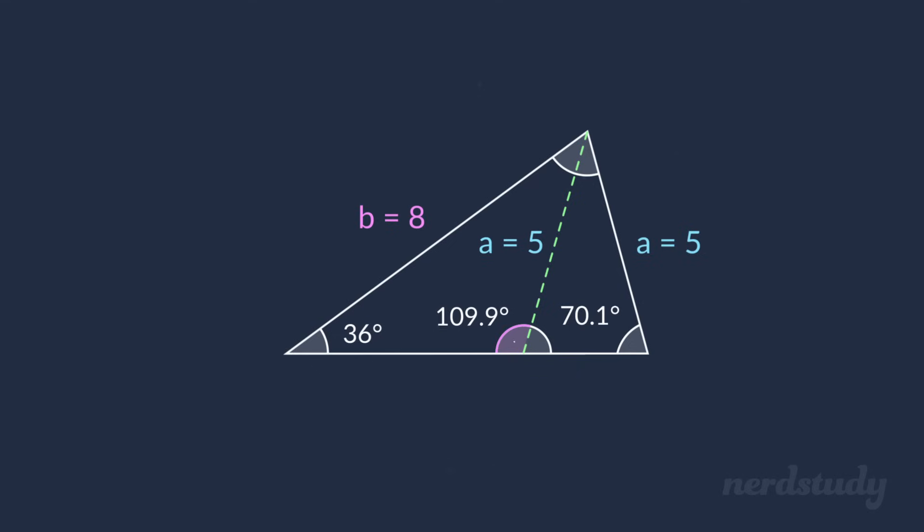Now, here's the key, when we add these two angles, if we get a value less than 180, then we know that there is room for this angle over here, and that we have successfully found our second case in the ambiguous case. So, since 109.9 plus 36 equals 145.9, which is less than 180, we know that this angle over here will be 180 minus 145.9, giving us 34.1 degrees for this angle.